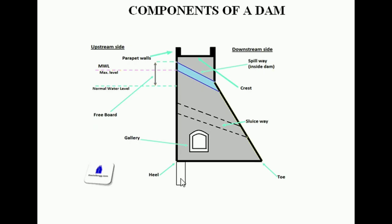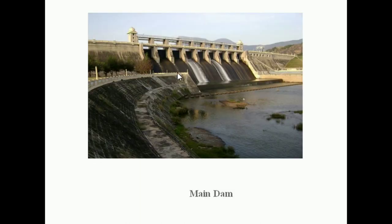This is called a cut-off wall. The cut-off wall is provided under the heel of the dam on the upstream side. It forms a protective layer to prevent water seepage from the base of the dam. If the cut-off wall is not provided, water will seep through the base of the dam and the dam will be subject to uplift pressure, causing it to float. To prevent such failure, a cut-off wall is provided under the base of the dam at the heel.